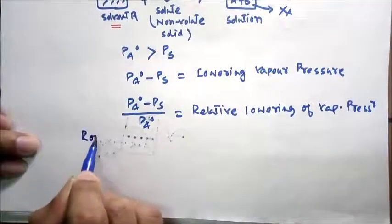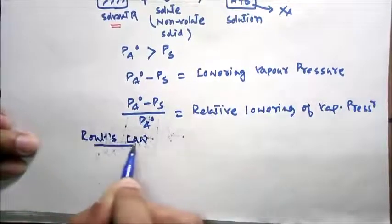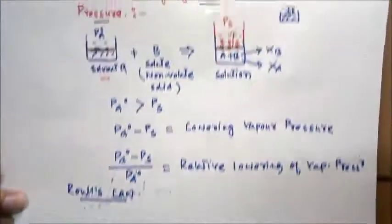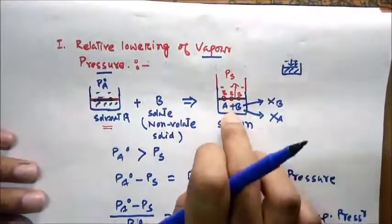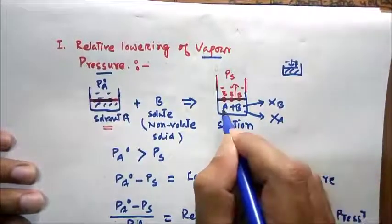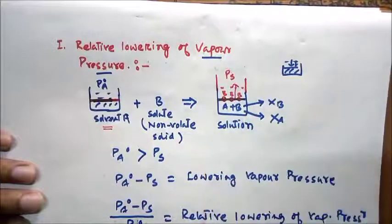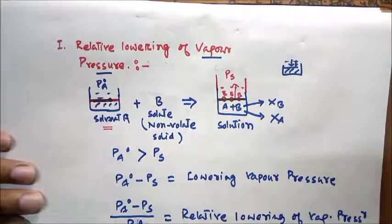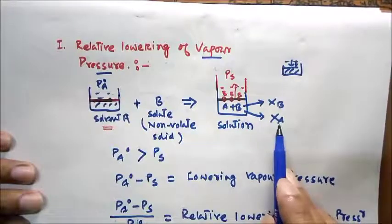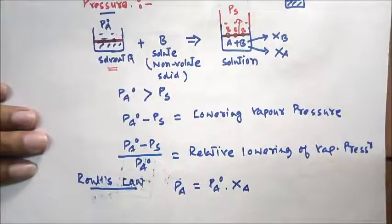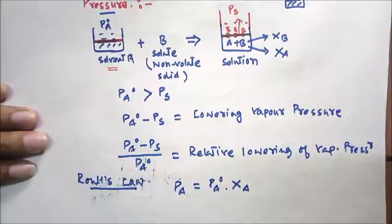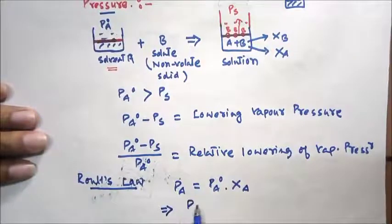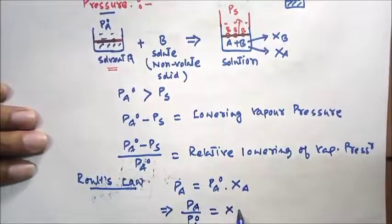According to Raoult's law, in the case of a solution, the pressure exerted by the solvent component A in the solution is the product of Pa0 — the vapor pressure of that component in the pure state — and the mole fraction of that component in the solution, XA. So this is Raoult's law for component A, the solvent: Pa = Pa0 × XA, which can be rearranged as Pa / Pa0 = XA.